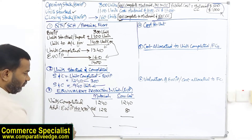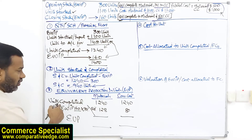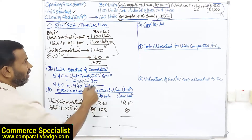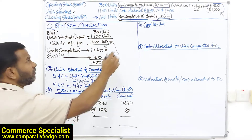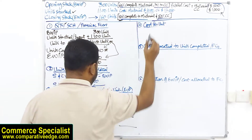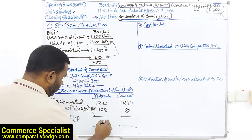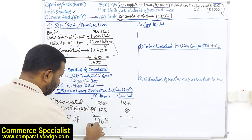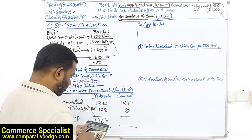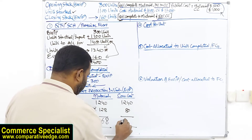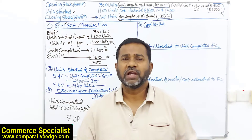Under weighted average, EUP is just a two-step calculation — unlike FIFO which has three steps. Take units completed directly, then add ending WIP multiplied by the existing stage of completion. This gives us 1,240 + 128 = 1,368 equivalent units for materials, and 1,240 + 80 = 1,320 equivalent units for conversion cost.